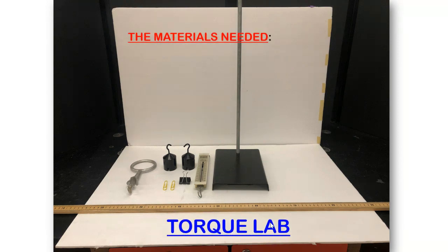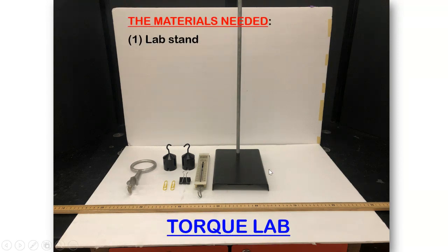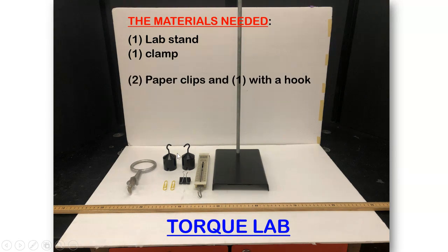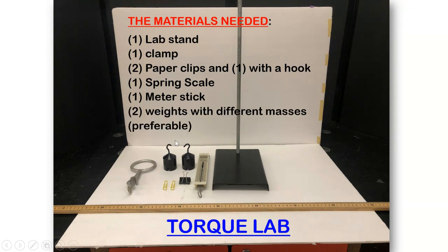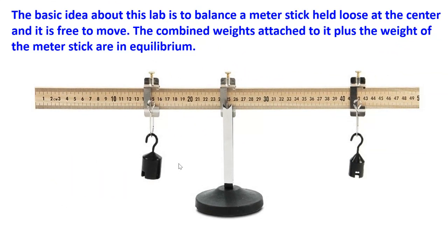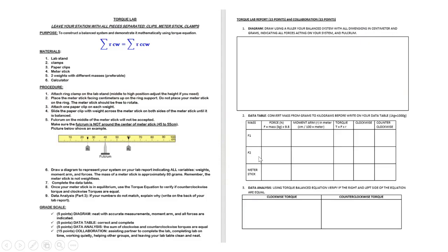To complete this lab, you need one lab stand, one clamp, two paper clips, one paper clip with a hook, one spring scale, one mini stick from 0 to 100 centimeters, and two weights with different masses. In this lab, we are using weights of the same mass, so we have to make some adjustments. The basic idea is to balance the midi stick held loose at its center, free to move, so that the combined weights attached plus the weight of the midi stick are all in equilibrium.